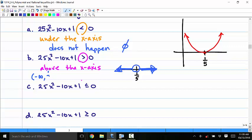So one-fifth with a parenthesis, union, one-fifth to infinity. Remember that you use the parentheses to exclude the one-fifth value.